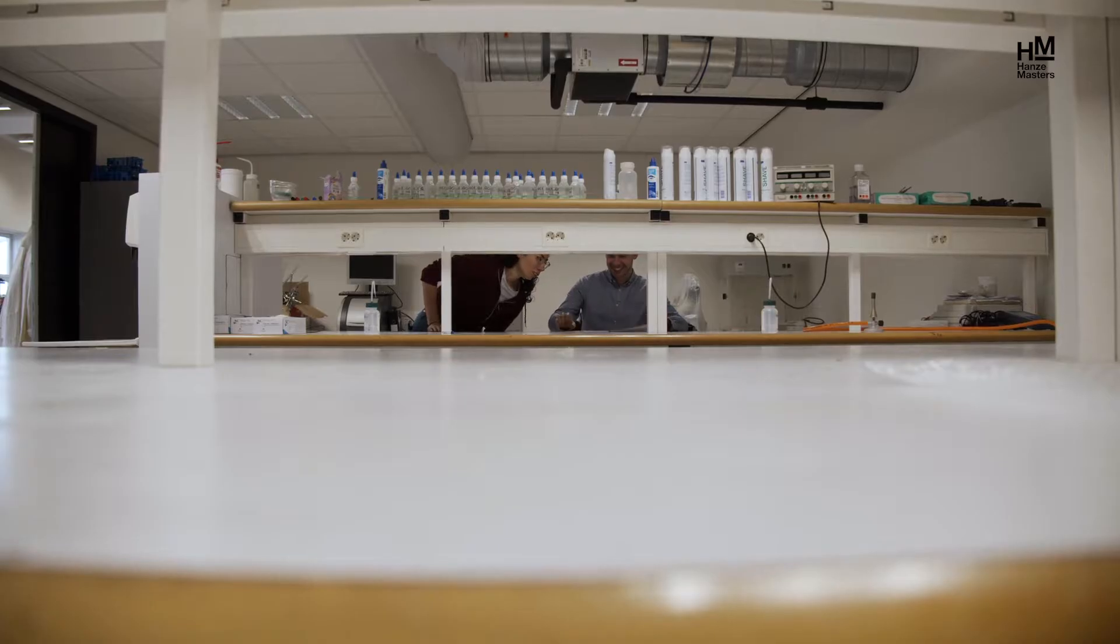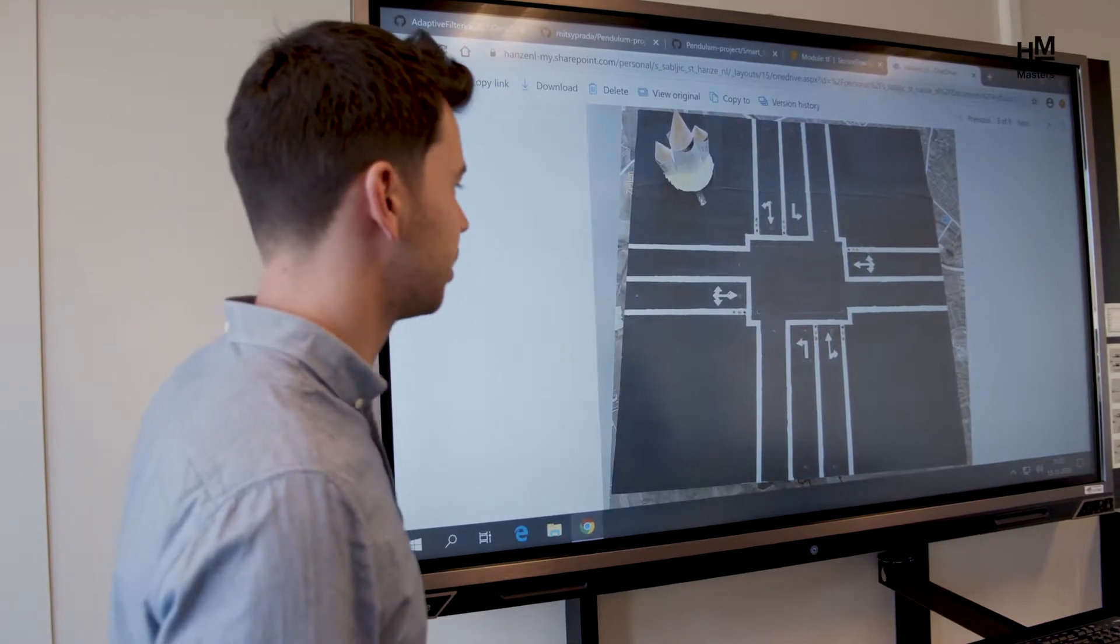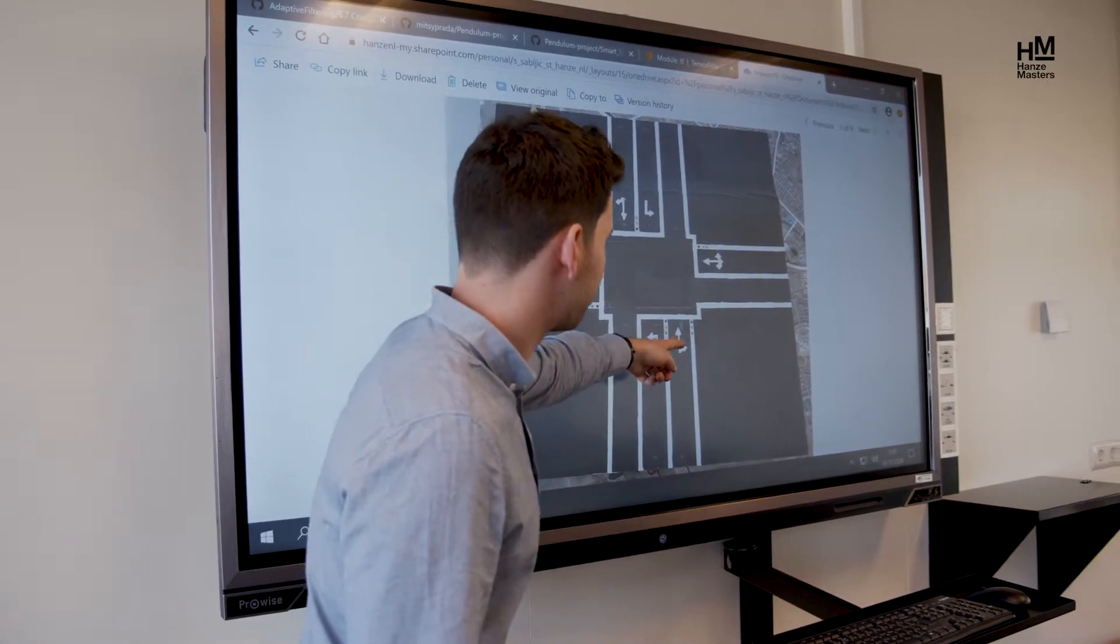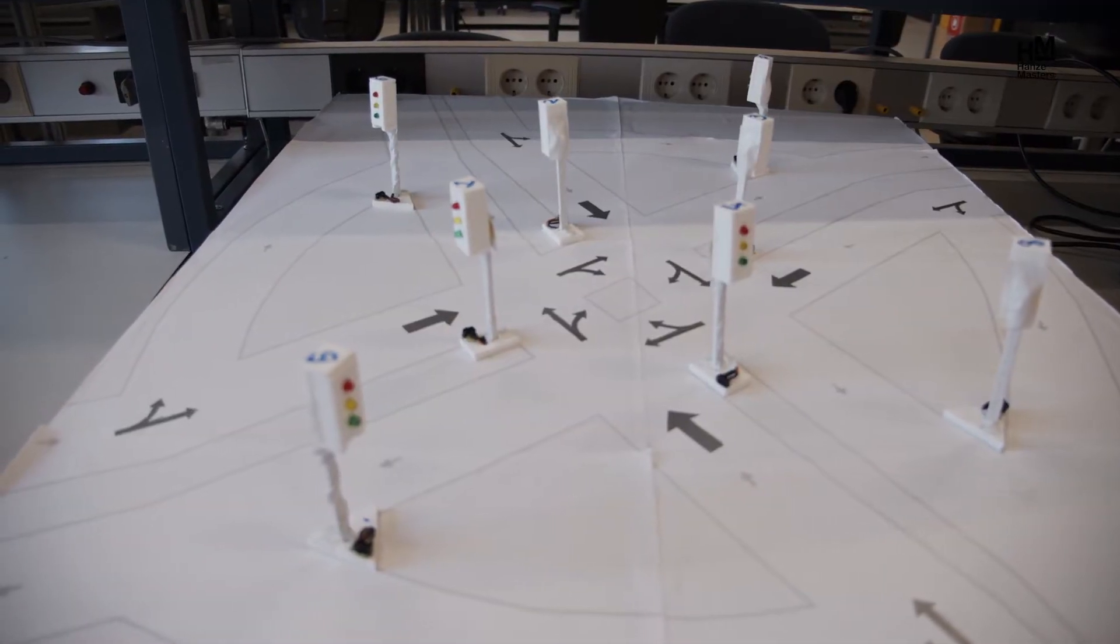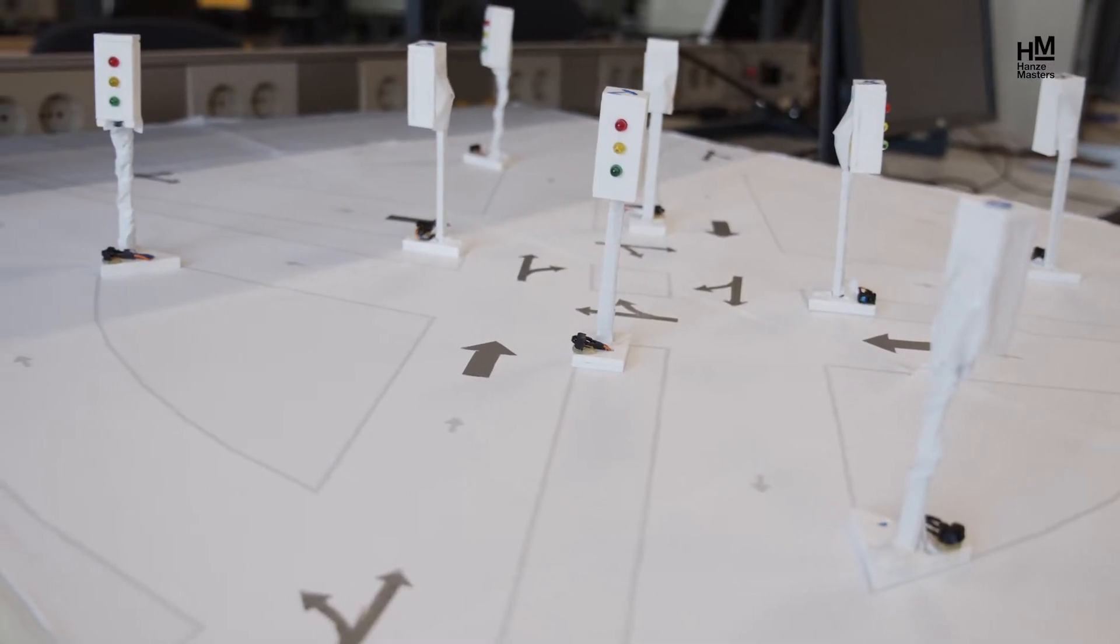The first course which we started was the introduction course, and we had to make an intersection using electronics. So we had to build small traffic lights and basically build an algorithm which will process the data in this intersection. And after completing this course, it really got me excited about the rest of the course. So this was a big motivation factor.